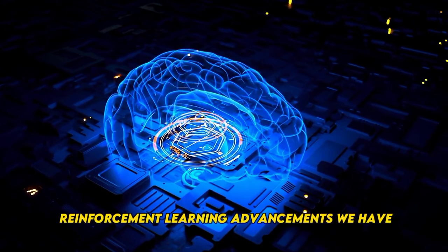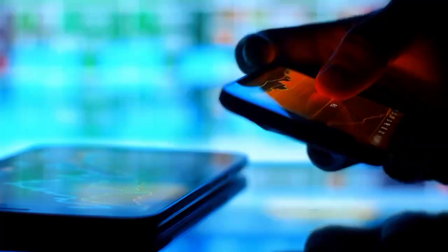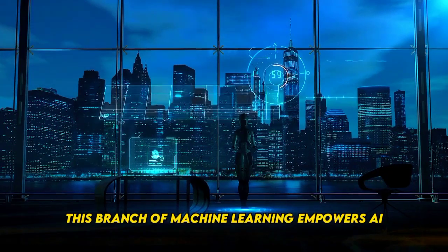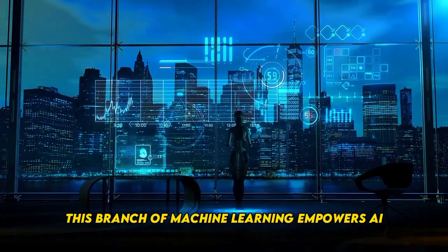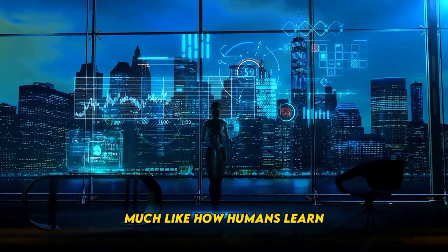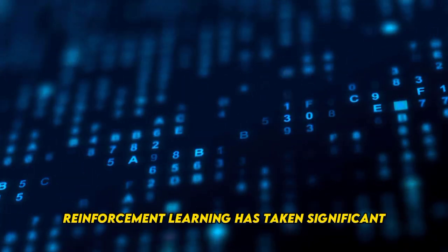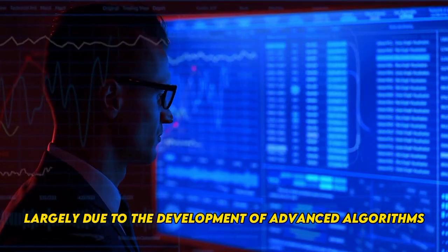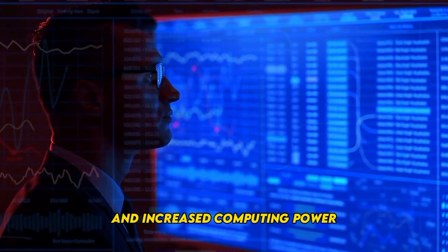Number 8: Reinforcement Learning Advancements. We have the remarkable advancements in reinforcement learning. This branch of machine learning empowers AI agents to learn complex tasks through trial and error, much like how humans learn. Reinforcement learning has taken significant strides in recent years, largely due to the development of advanced algorithms and increased computing power.